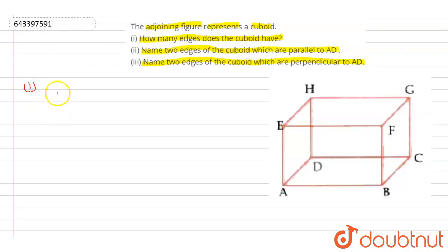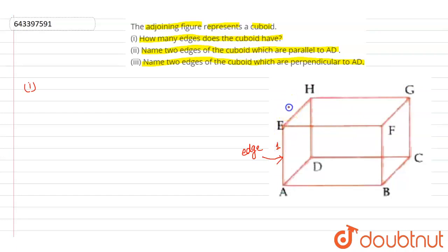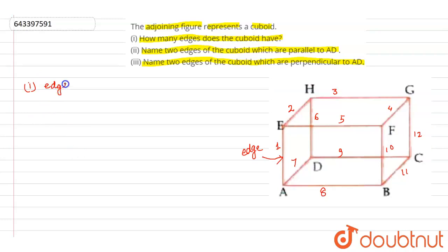So question number 1, how many edges does the cuboid have? We can see that there are edges. Let us count: 1, 2, 3, 4, 5, 6, 7, 8, 9, 10, 11, 12. So there are 12 edges.